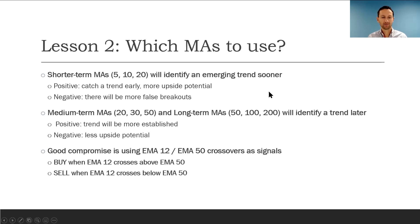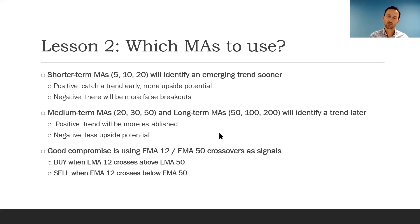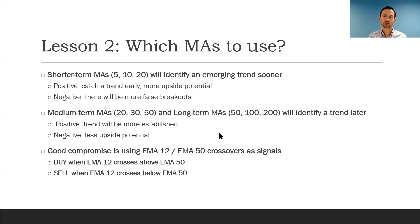What I have found as a good compromise — and many traders agree — is using the EMA12 and EMA50 for crossover signals. The EMA12 is not the shortest one but it's relatively sensitive to price changes, and the EMA50 is a mid-term moving average that already captures the trend relatively well. Combining those two can give us decent setups, catching the trend relatively early but not too early, and leaving some decent upside as well.